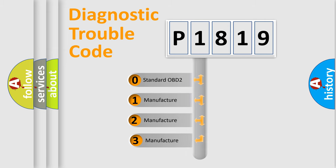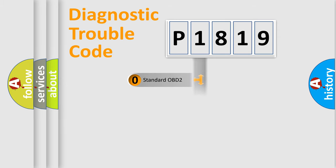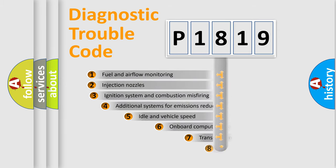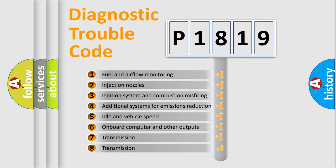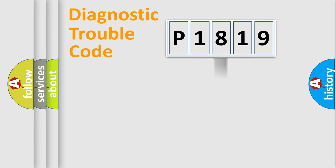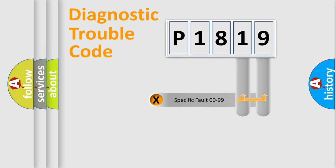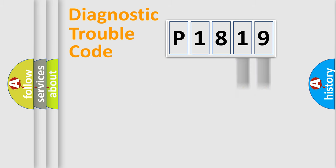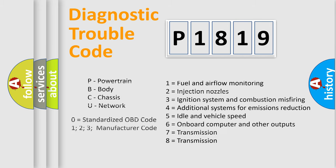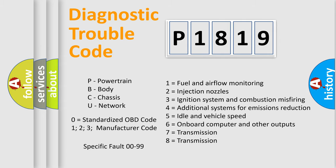If the second character is expressed as zero, it is a standardized error. In the case of numbers 1, 2, or 3, it is a more manufacturer-specific expression of the car-specific error. The third character specifies a subset of errors. This distribution is valid only for the standardized DTC code. Only the last two characters define the specific fault of the group, and this division is valid only if the second character code is expressed by the number zero.